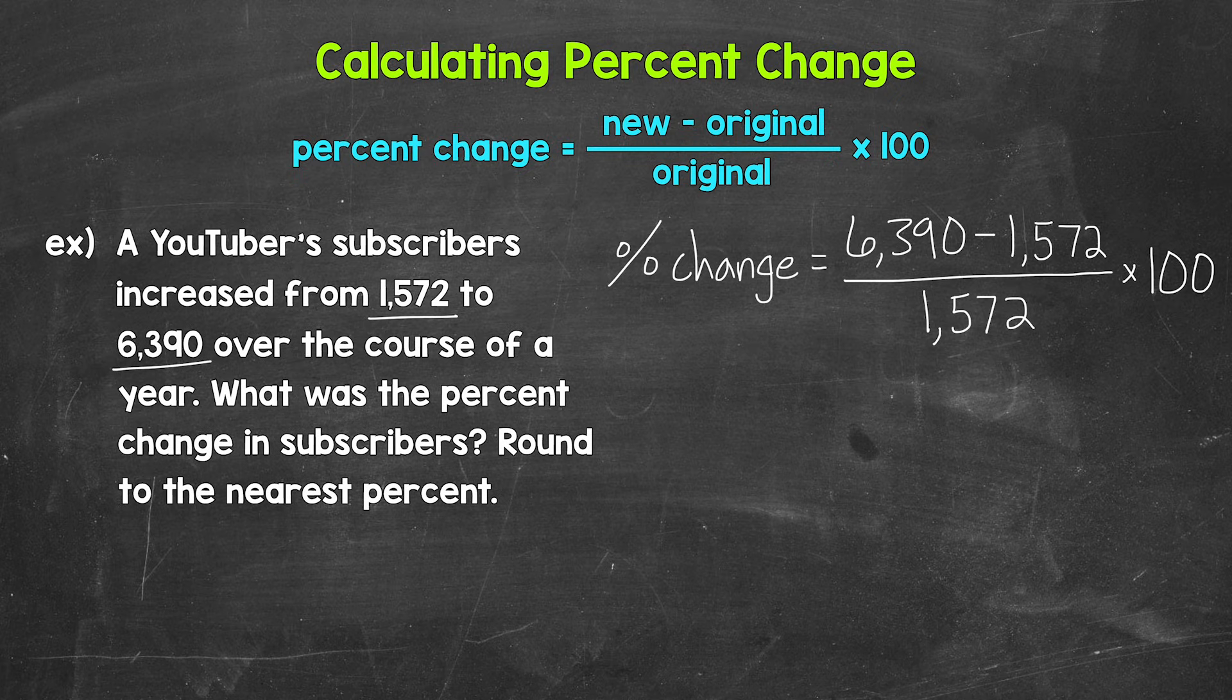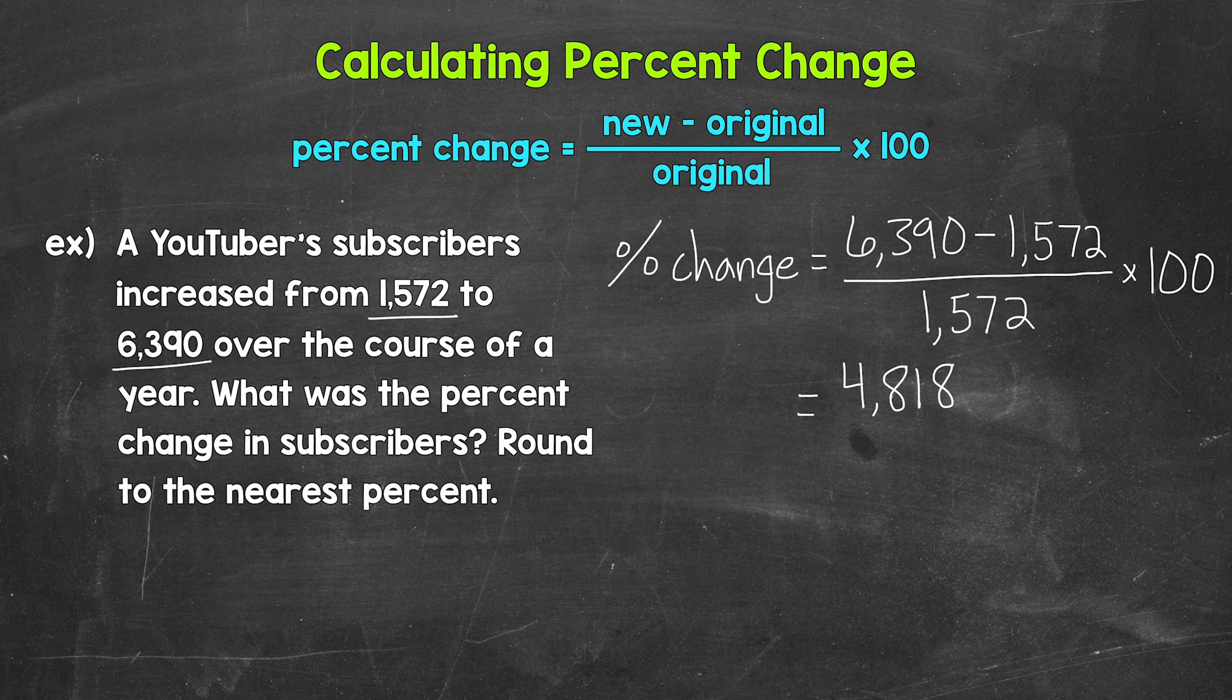We will subtract first. So 6,390 minus 1,572, that gives us 4,818. Now that's the amount of change. And since it's positive, that tells us we had an increase. So the subscribers increased by 4,818.